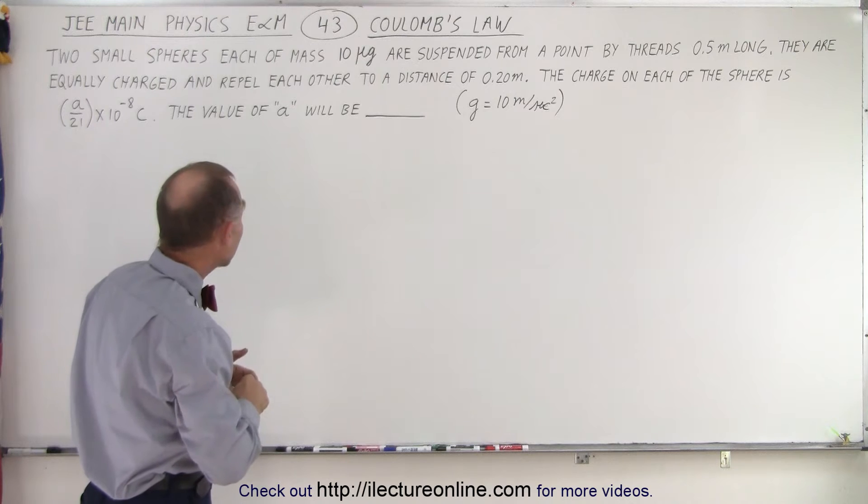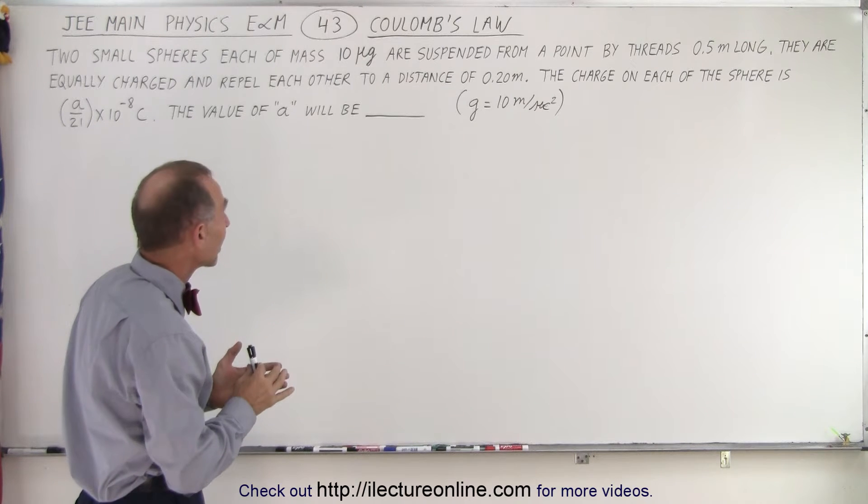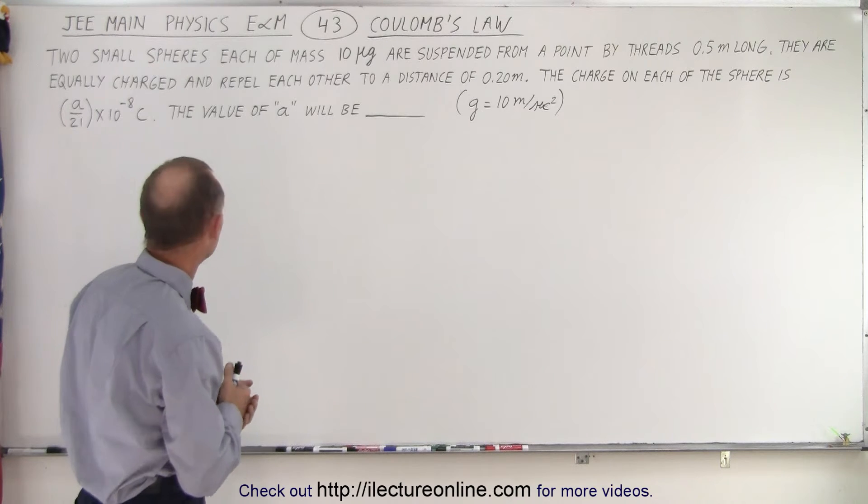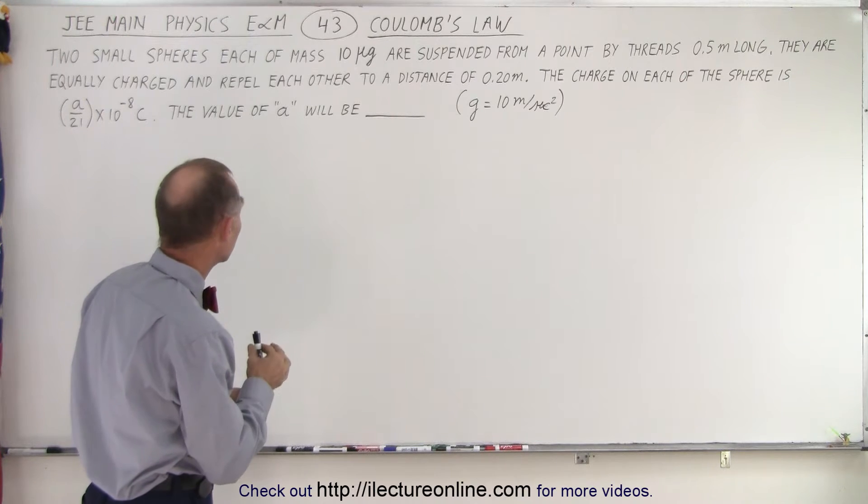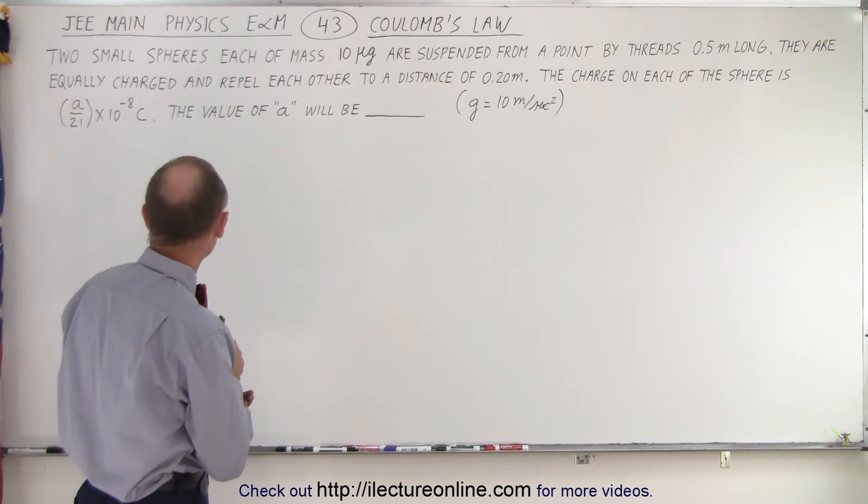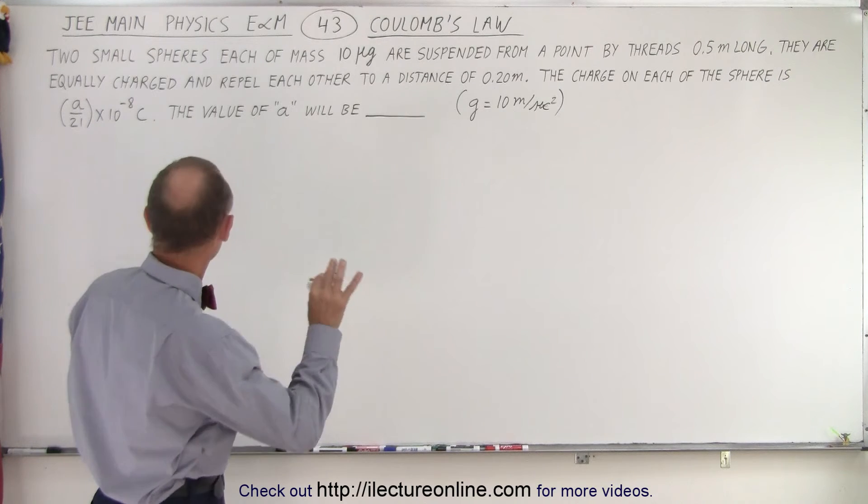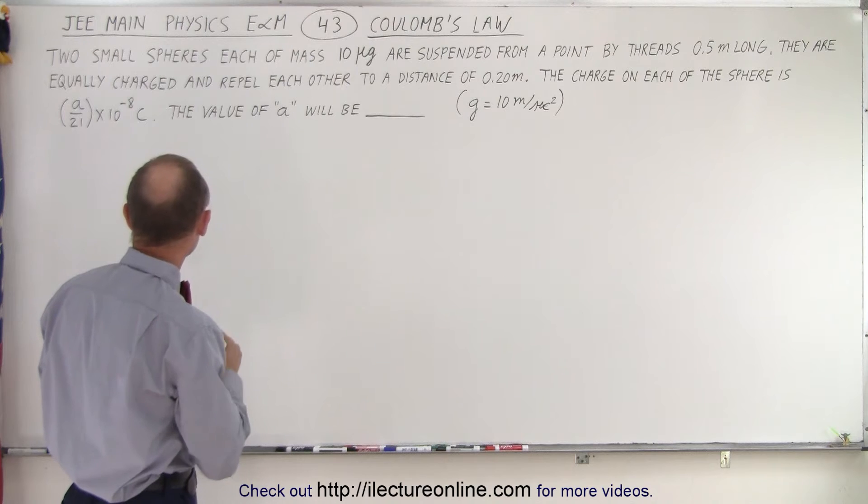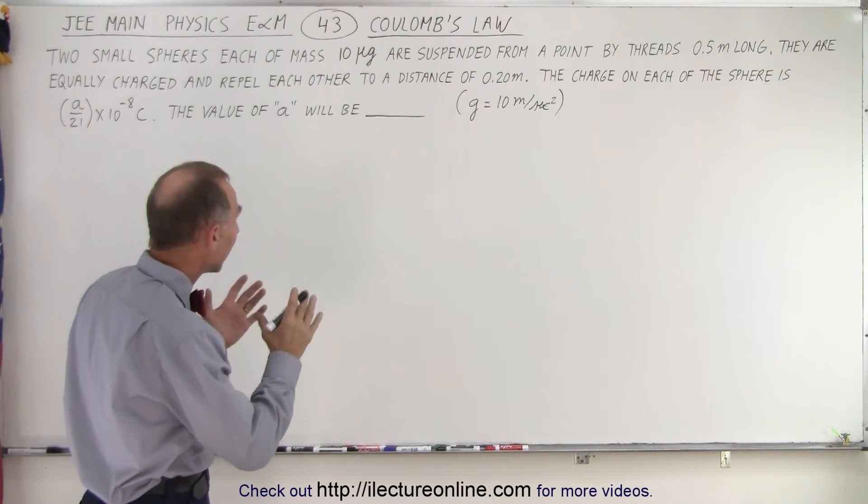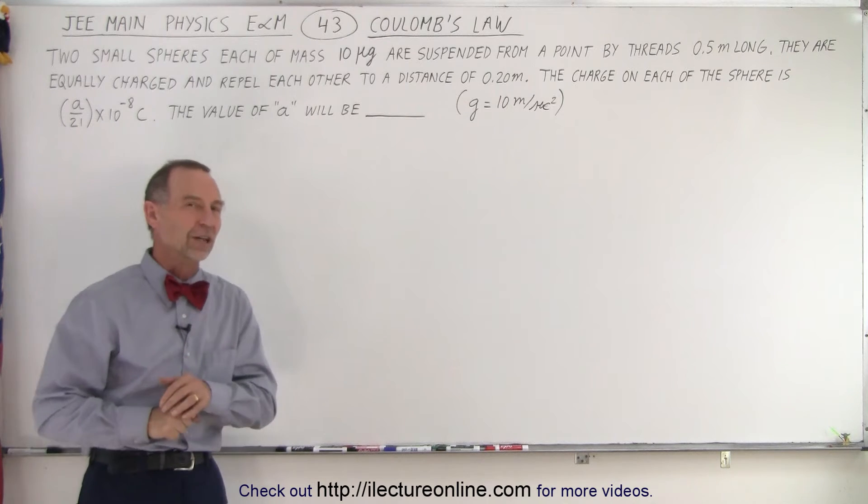So two small spheres, each of mass 10 micrograms, are suspended from a point by threads 0.5 meters long. They are equally charged and repel each other to a distance of 0.2 meters. The charge on each of the spheres is A over 21 times 10 to the minus 8 Coulombs. The value of A will be, and let's take G as 10 meters per second squared.